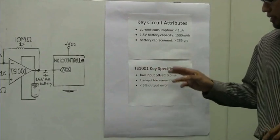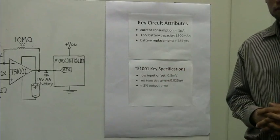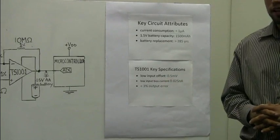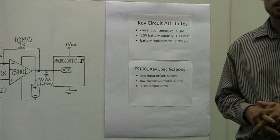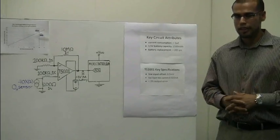The precision of the circuit depends highly on the TS-1001 low input offset voltage of only 0.5 millivolts and on the low input bias current of only 0.025 nanoamps, which results in less than a 3% output error when detecting down to a dangerous oxygen level of 18%.